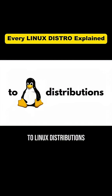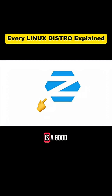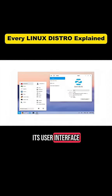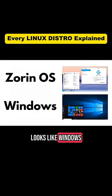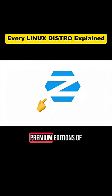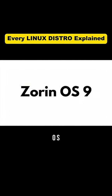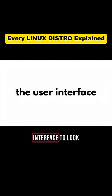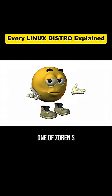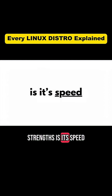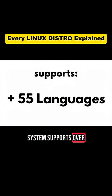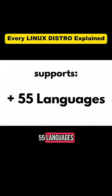Zorin OS. For those new to Linux distributions, Zorin OS is a good place to start. Its user interface looks like Windows, and in Zorin's premium editions of OS 9, you can change the user interface to look like Apple's Mac OS. One of Zorin's strengths is its speed, and its operating system supports over 55 languages.